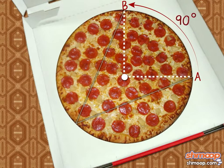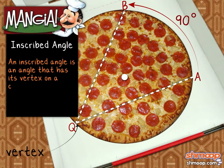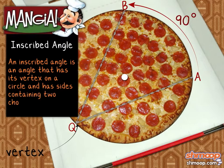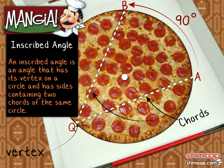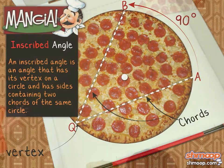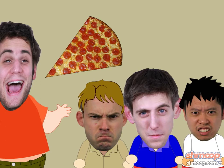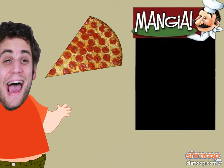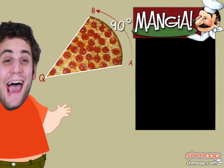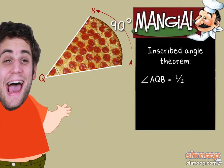Instead of cutting a central angle, as you expected him to cut, he cut an inscribed angle. If an angle has its vertex on a circle and has sides containing two chords of the same circle, then the angle is inscribed in that circle. While inscribed angles may seem annoying, they have interesting properties. The inscribed angle theorem tells us that the angle measure of AQB equals one half times the measure of arc AB. Given that the arc's measure AB is 90 degrees, we can multiply one half times 90 to get 45 degrees.